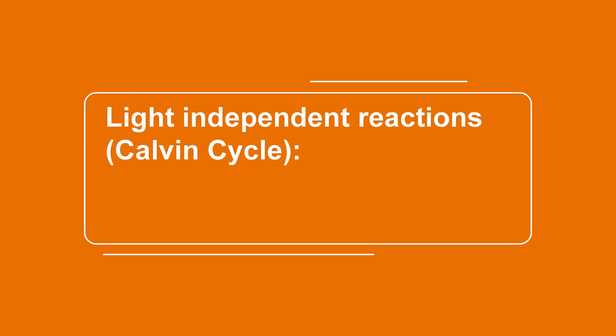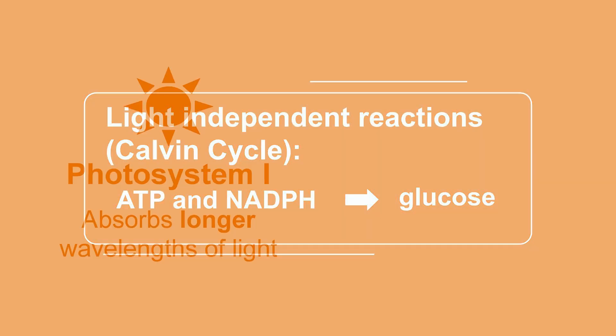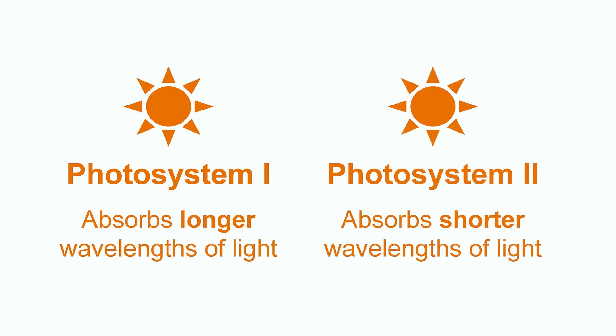The light-independent reactions, also known as the Calvin cycle, is a pathway where ATP and NADPH molecules are used to create glucose. Remember that photosystem 1 and photosystem 2 are multi-protein complexes that contain different types of chlorophylls that absorb different wavelengths of light.